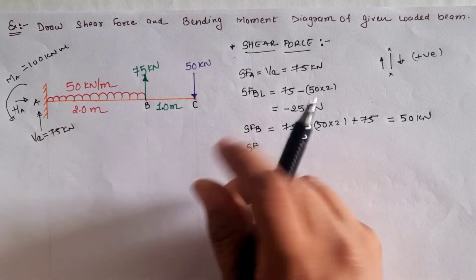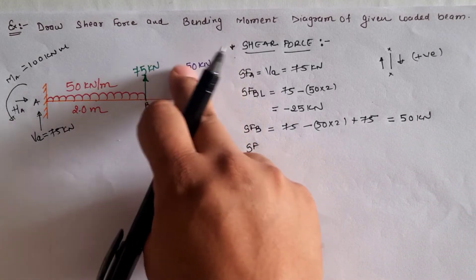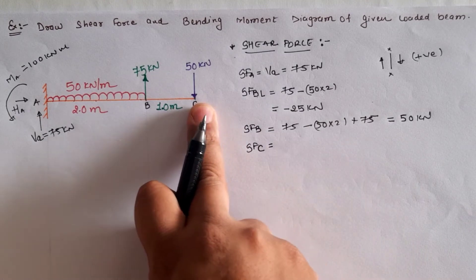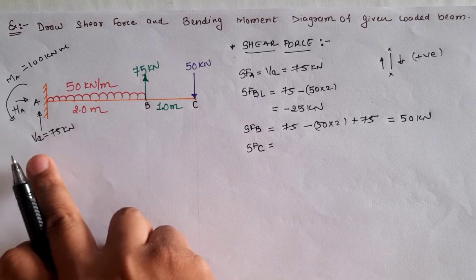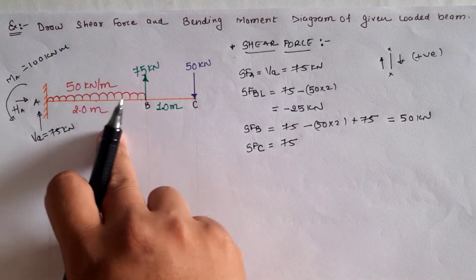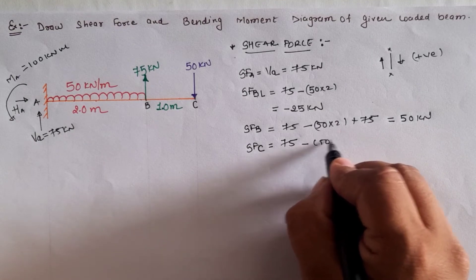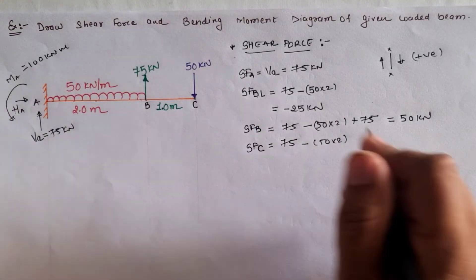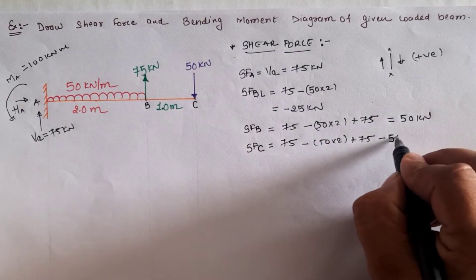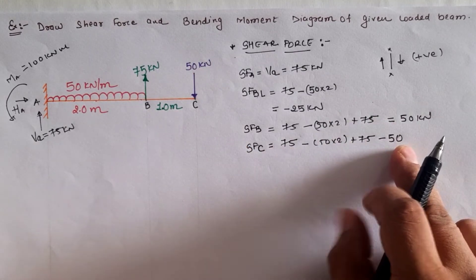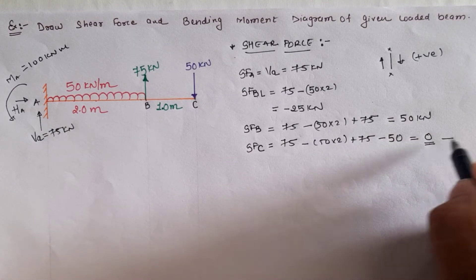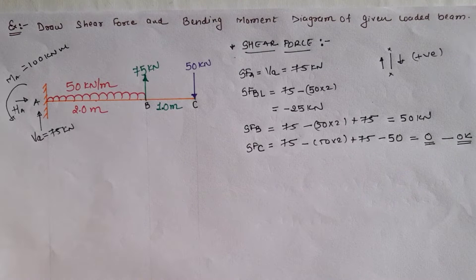At point C, considering the 50 kilonewton downward load, the shear force must be zero. Calculating from the left-hand side: 75 upward, minus 50 × 2 from the UDL, plus 75 upward, minus 50 downward gives a total of zero. This confirms our calculations are correct.